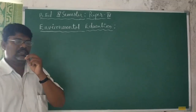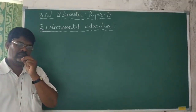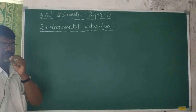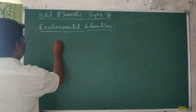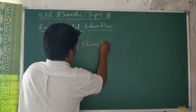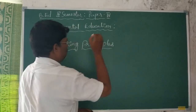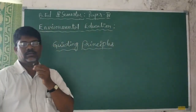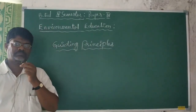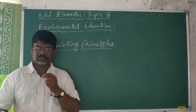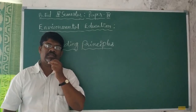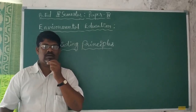There are some principles to understand the environmental perspectives, called the guiding principles of environmental education. There are five kinds of guiding principles. The first is the resource principle. Under the resource principle, there are two kinds of resources: renewable resources and non-renewable resources. For example, renewable resources include water, air, and the environment, while non-renewable resources include fossil fuels and fresh water.